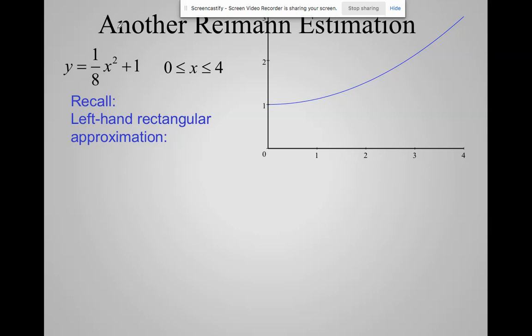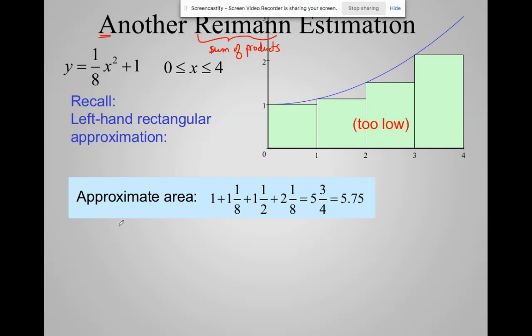But for right now, I want to do another Riemann estimation. Remember, Riemann just means a sum of products. And LRAM and RRAM and MRAM were all products of areas of a rectangle. But I can do another Riemann sum and estimate the area under this curve. So it is my same function. I just changed the Ts to Xs. I'm going to go from 0 to 4. And there's my left-hand approximation, which you know from our previous discussion, since this function is increasing on 0 to 4, the left-hand approximation is going to be too low. And there is the approximate area.